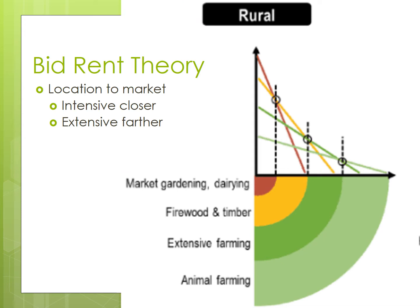That brings us to intensive and extensive systems of agriculture and the bid-rent theory. A bid-rent curve can be used to indicate the starting position for each land use relative to a central place, as well as where each land use would end. According to the bid-rent theory, the land closest to that central point was more valuable because it was more accessible to more people, so there would be more competition driving up the cost of that land. So farmers who use that land must do so intensively to produce enough on a relatively small amount of land. Intensive agriculture, like rice farming, dairying, and market gardening, means that a farmer gets a higher yield per acre. Farmers closer to the market wouldn't have as much land because that land was expensive, and therefore they would have to use that land more intensively.